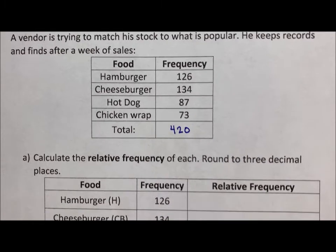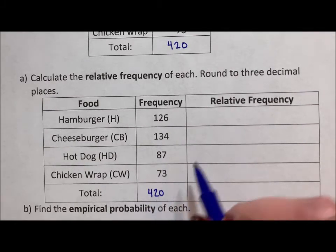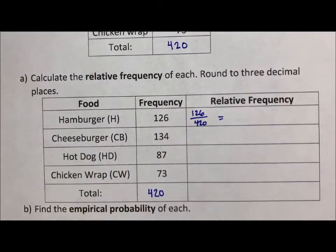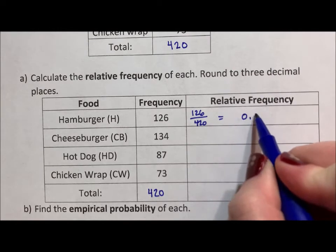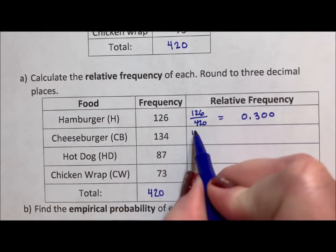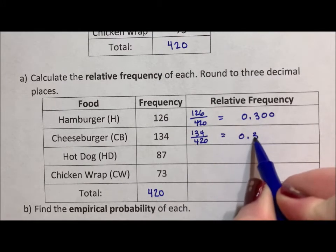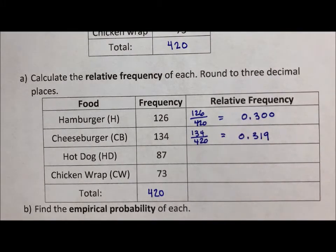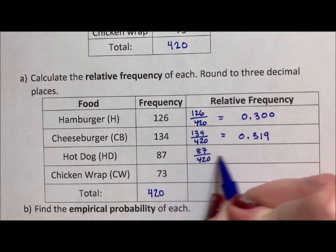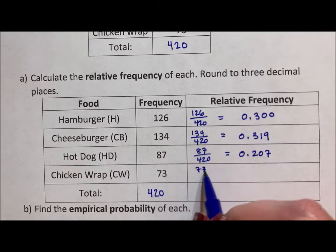So to figure out the relative frequency, we're going to take 126 divided by 420. It says round to three decimal places. This is actually a pretty nice number - it's 0.300. Then we have 134 divided by 420 which comes out to 0.319. The rest of these numbers are rounded by the rules of math. 87 divided by 420 comes out to 0.207, and then we have 73 divided by 420.